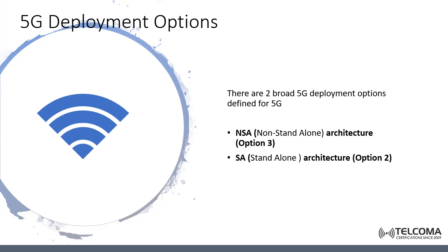The industry has decided to focus the initial deployment of 5G on only two options: option three and option two. This is because the other options don't have direct steps leading towards a long-term 5G target architecture. There are some differences in cost, timelines, and complexity between the two options, depending mainly on the use cases applied by the operator and the readiness of the operator implementing the deployment.